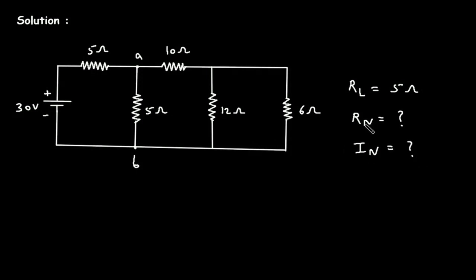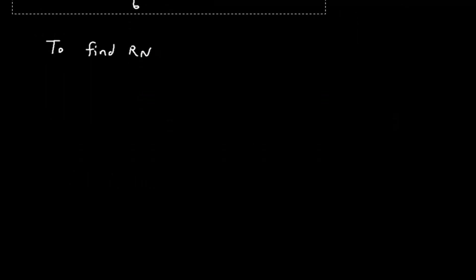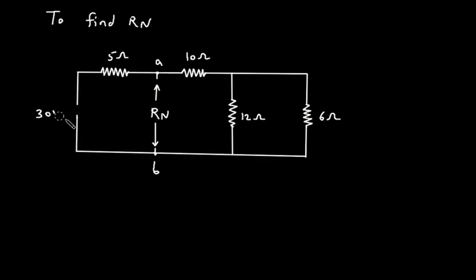First we will find Norton's resistance, that is Rn. To find Rn, we have to turn off all the independent sources and remove this RL. First we will remove this RL, and between terminal A and B, this will be our Rn. We have to turn off this independent voltage source. When we turn off an independent voltage source, it will be short-circuited.